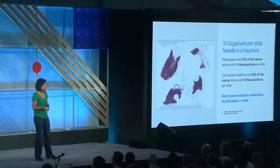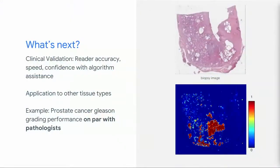An ideal system uses the model for high sensitivity and relies on the pathologist to review and call out the false positives. This is very promising, and we're working on validation in a clinic right now with reader studies, because how this actually interacts with a doctor is really quite important. There are also clearly applications to other tissues — we have some early studies showing this works for prostate cancer and Gleason grading.